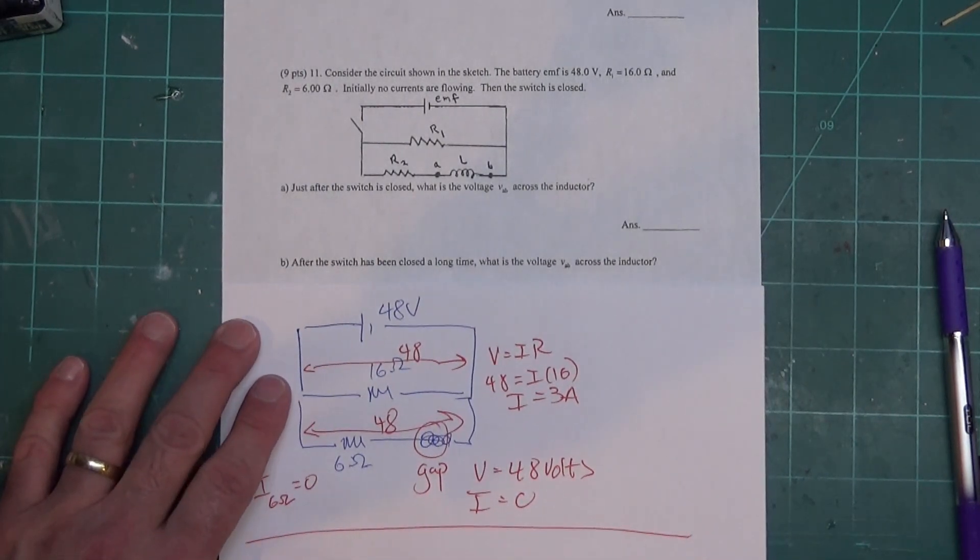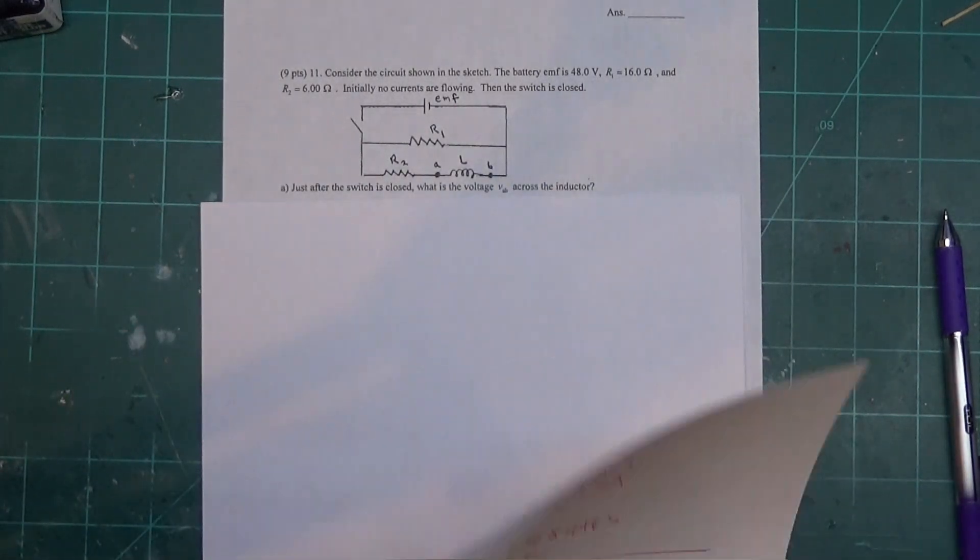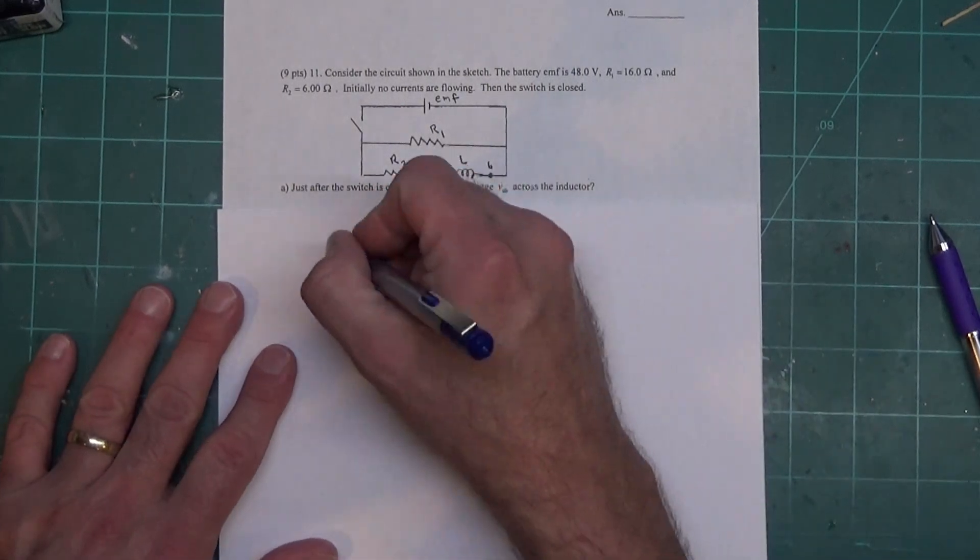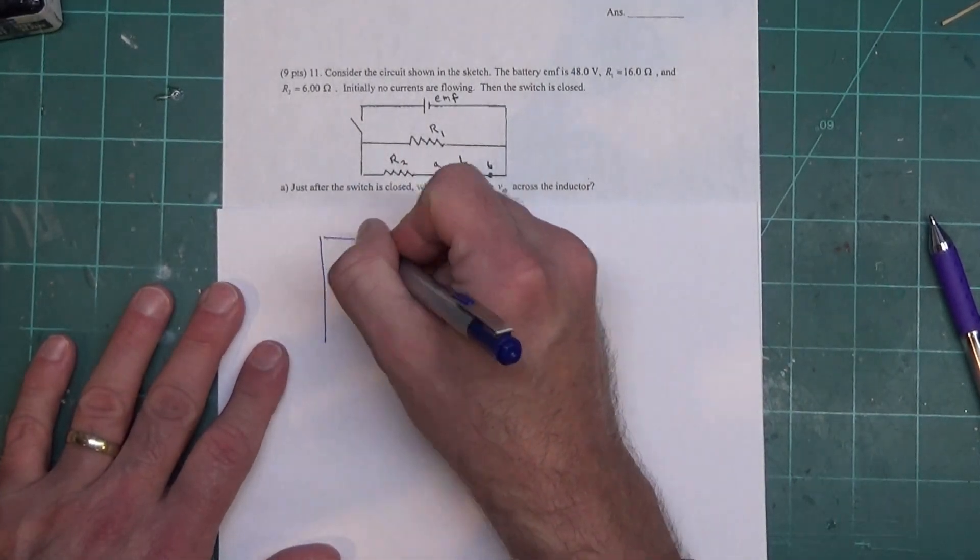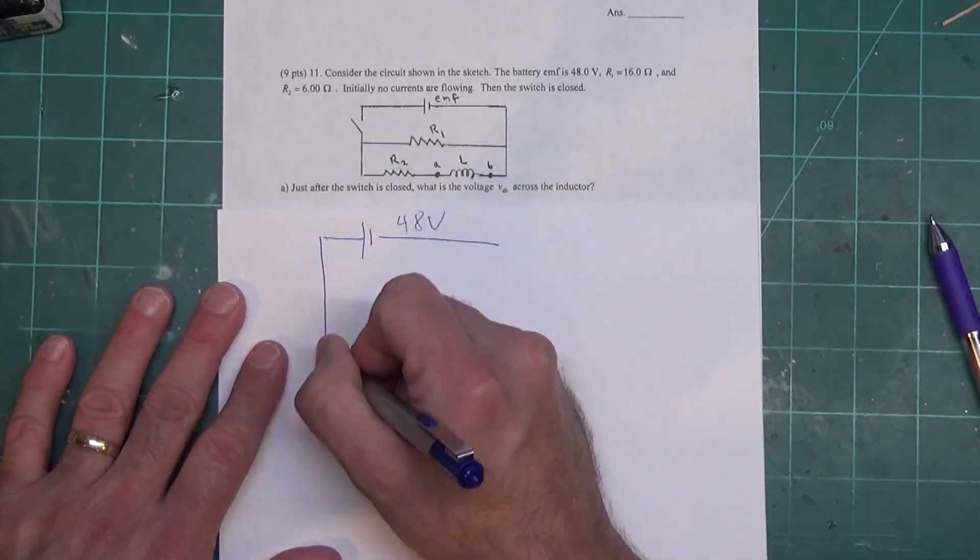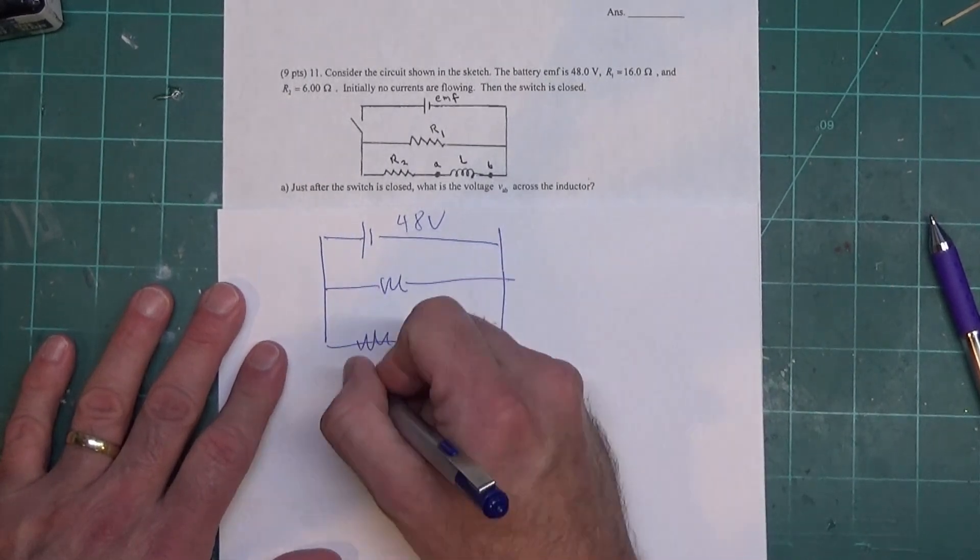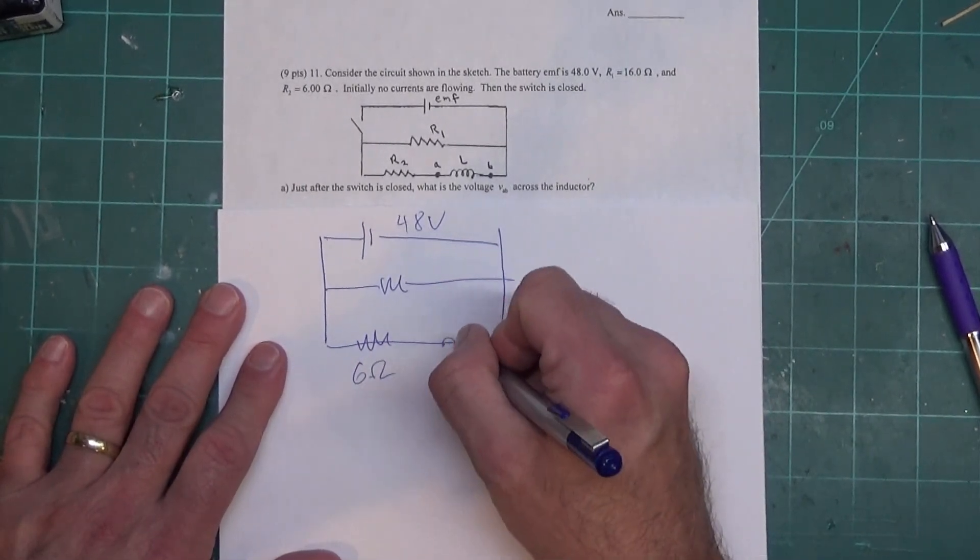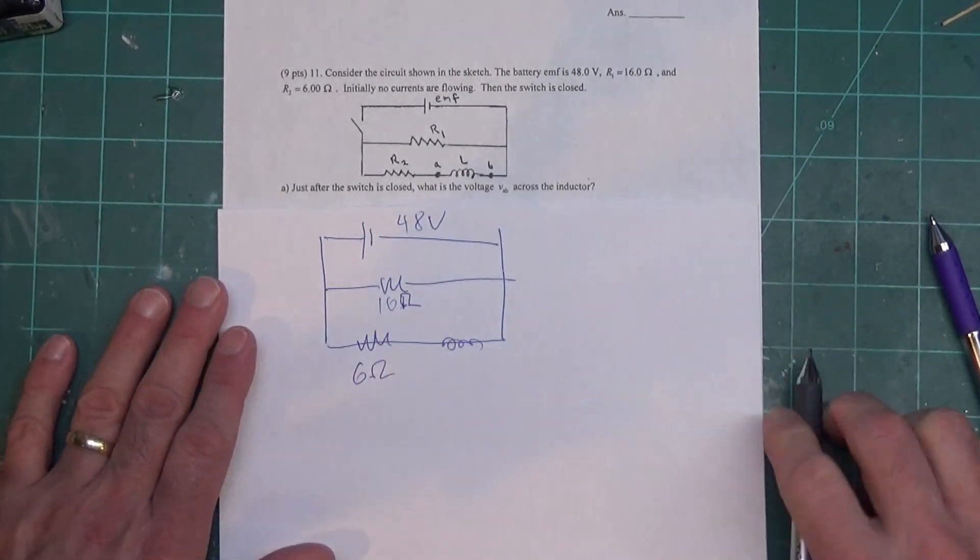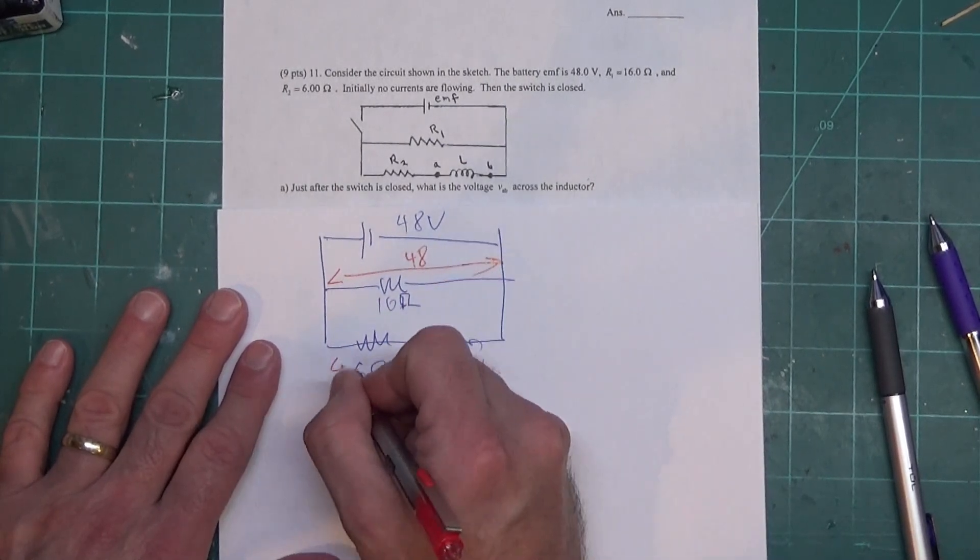So we have the current and voltage across the inductor when switch is first closed. After switch has been closed a long time, what's the voltage across the inductor? So if I redraw this, because I like to redraw it every single time, we have our EMF up here of 48 volts, we still have the 16 ohm resistor there, we still have the 6 ohm resistor here, we still have our inductor here. We will have 48 volts across each part.